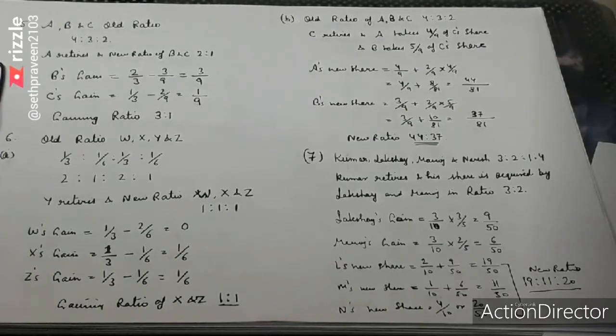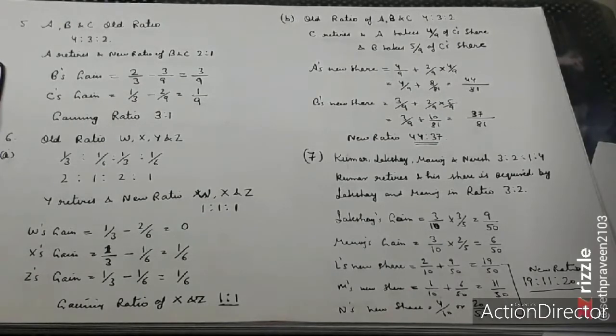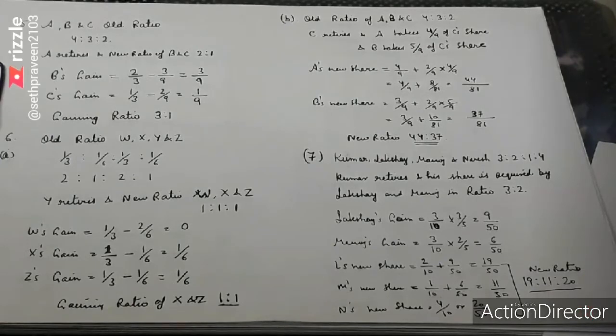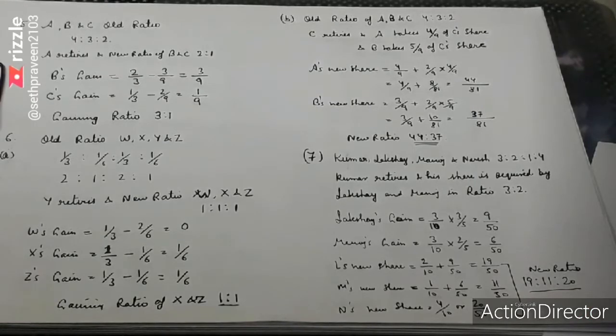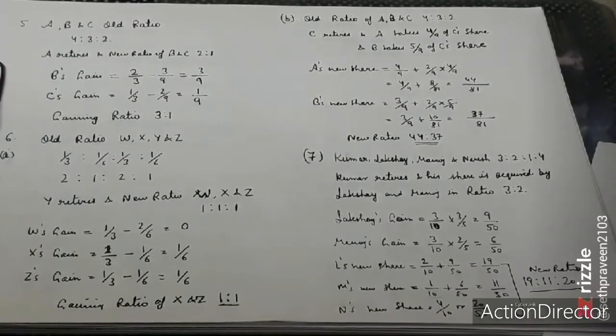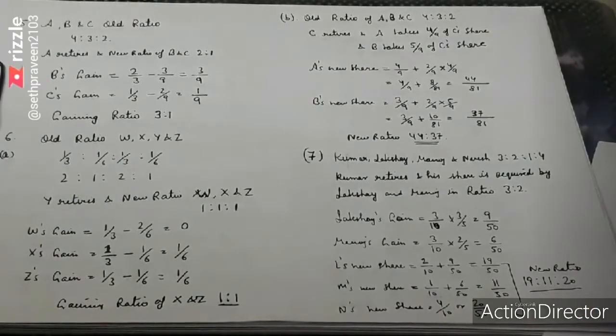Mohan's share is 3 by 50 and Sohan's gain is 2 by 50. Adding these gains to their previous shares, Mohan's new share becomes 3 by 10 plus 3 by 50 equals 18 by 50. Sohan's becomes 2 by 10 plus 2 by 50 equals 12 by 50, or 11 by 50 in the new share.